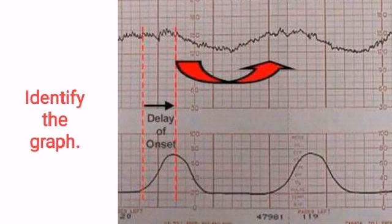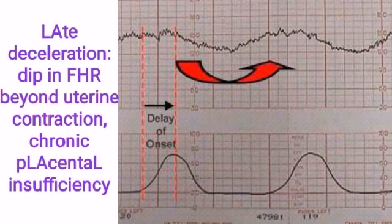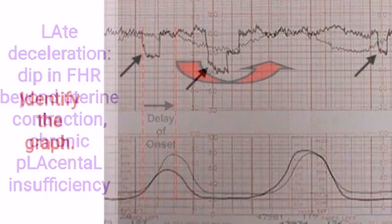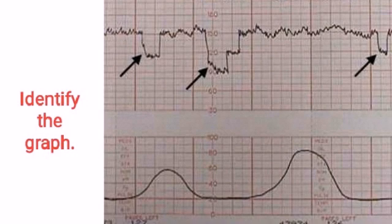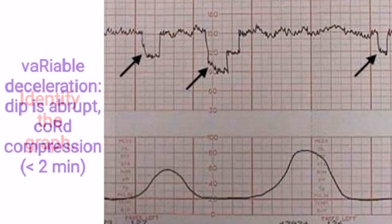Identify the graph: Late deceleration, seen in chronic placental insufficiency. Identify the graph: Variable deceleration, seen in cord compression.